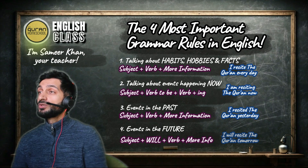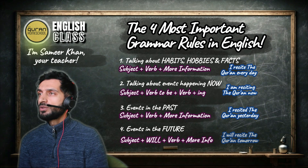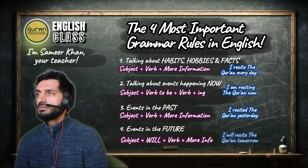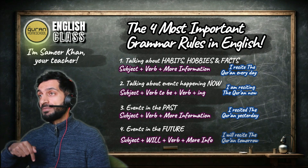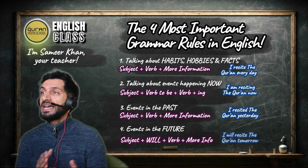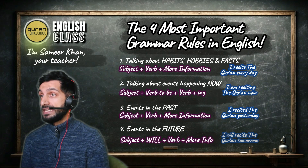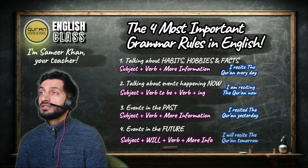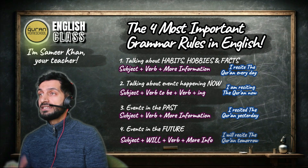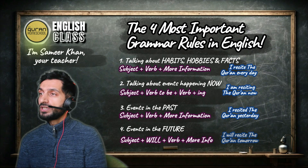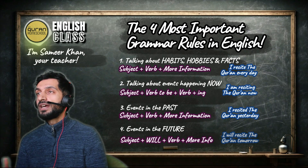Number one — talking about a habit: I recite the Quran every day. Number two — talking about something happening now: I am reciting the Quran now. Number three — the past: I recited the Quran yesterday. Number four — the future: I will recite the Quran tomorrow.